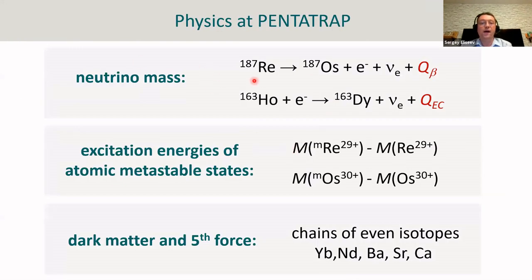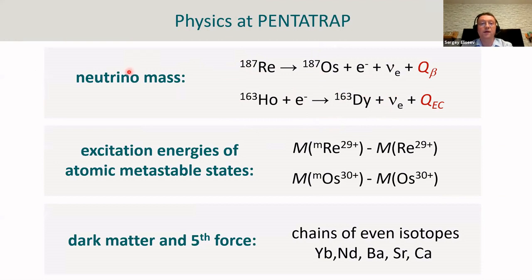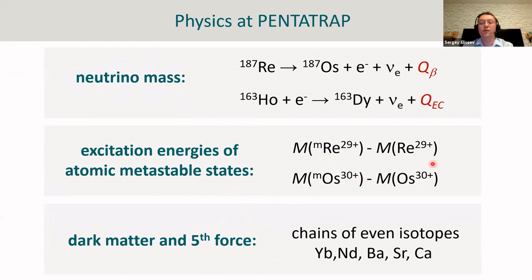We have a device for very precise mass ratio determination. Who needs such precise measurements? The answer is yes — several experiments need assistance from high-precision Penning trap mass spectrometry. I've picked three groups: experiments on the determination of the neutrino mass, experiments on the search for the fifth force, and searches for atomic metastable states.